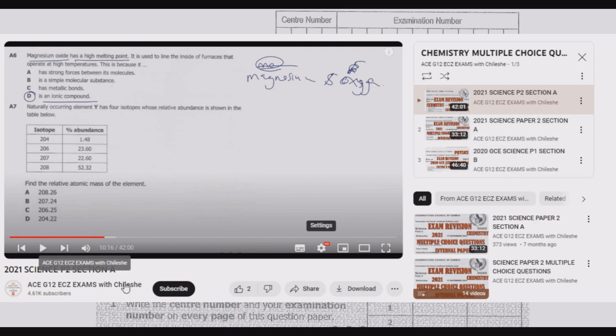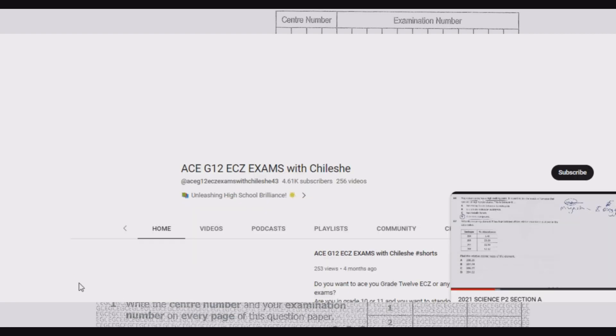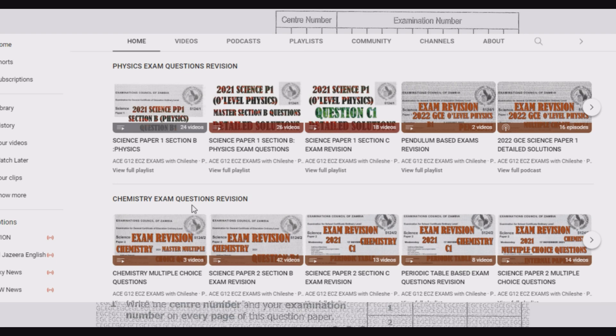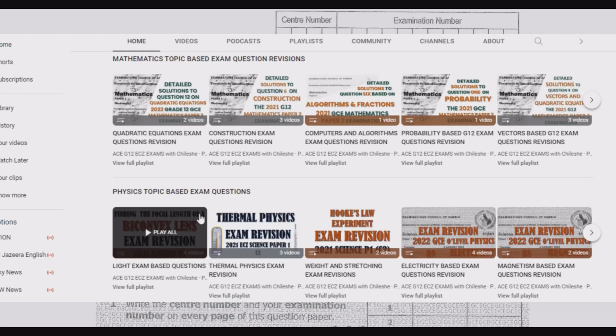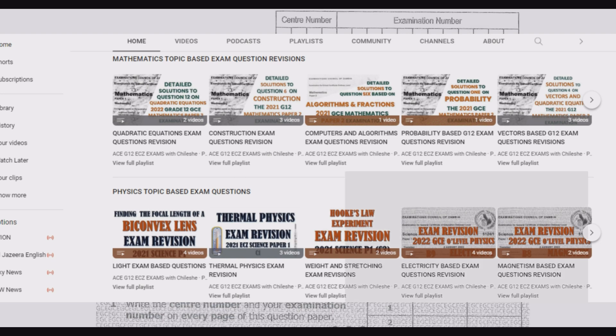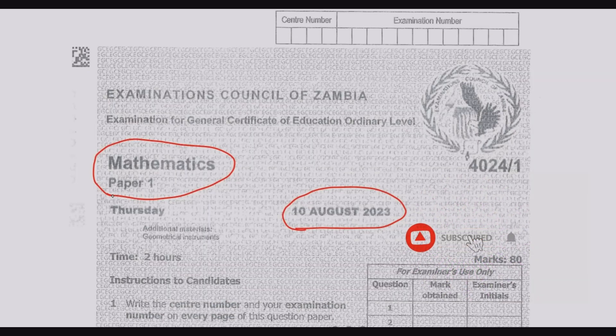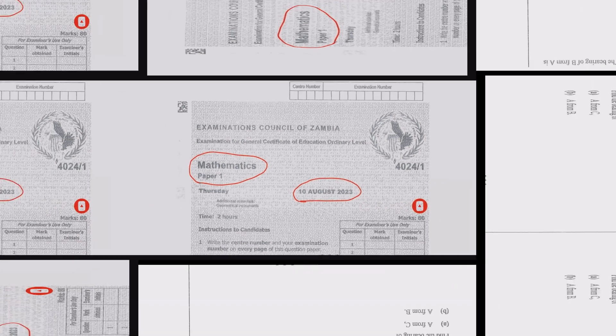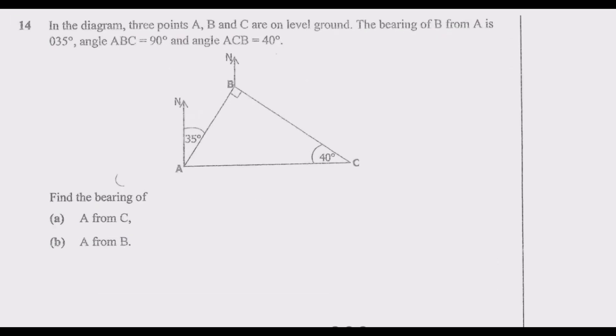Questions are grouped according to the paper and topics. This is important for you, especially if you're struggling with a specific topic. You can go to a specific topic and find a series of questions from different papers as far back as 2017.